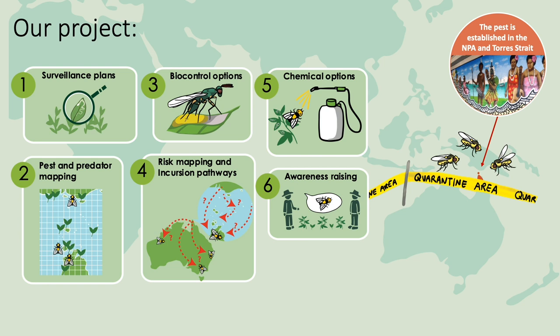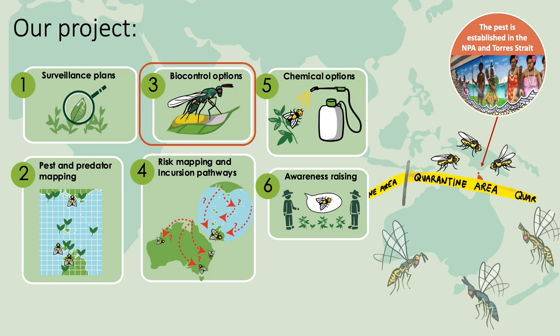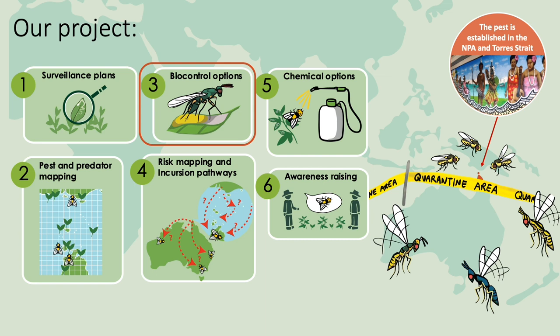Since 2017, CESAR has been leading a Hort Innovation project funded by the vegetable, nursery, and melons industries, building a broad preparedness plan for the vegetable leaf miner. One of the questions we aimed to answer was whether Australia's existing predator communities could mitigate this pest. We approached this from a couple of angles, including reviewing existing literature as well as going out on surveys within the Torres Strait and northern peninsula area where the fly is currently found, and beyond into growing regions where the fly might one day establish.